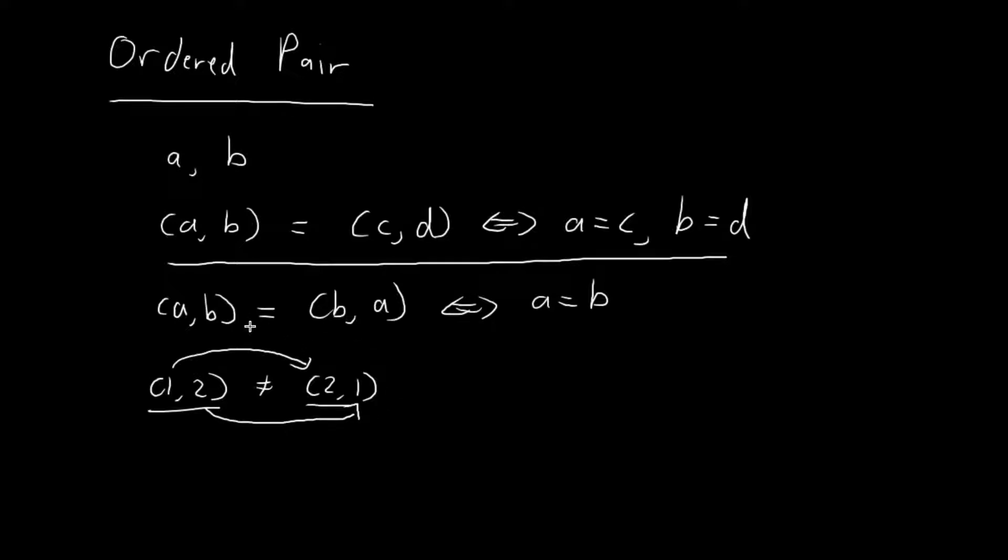You can contrast this concept with a set. Using the definition of equality for a set, you can verify that the set {A,B} is actually the same thing as the set {B,A}. So you can see that for sets, the ordering does not matter. But the ordering does matter for an ordered pair, and hence its name, an ordered pair.